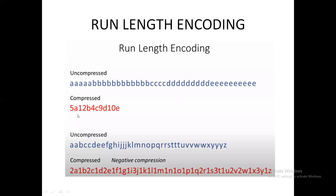In run length encoding there are two types of outcomes: positive compression and negative compression. In positive compression, the original data is larger than the compressed data — the encoded data is smaller than the original. But in negative compression, the encoded data itself is larger than the actual data. We will be going for positive compression only.